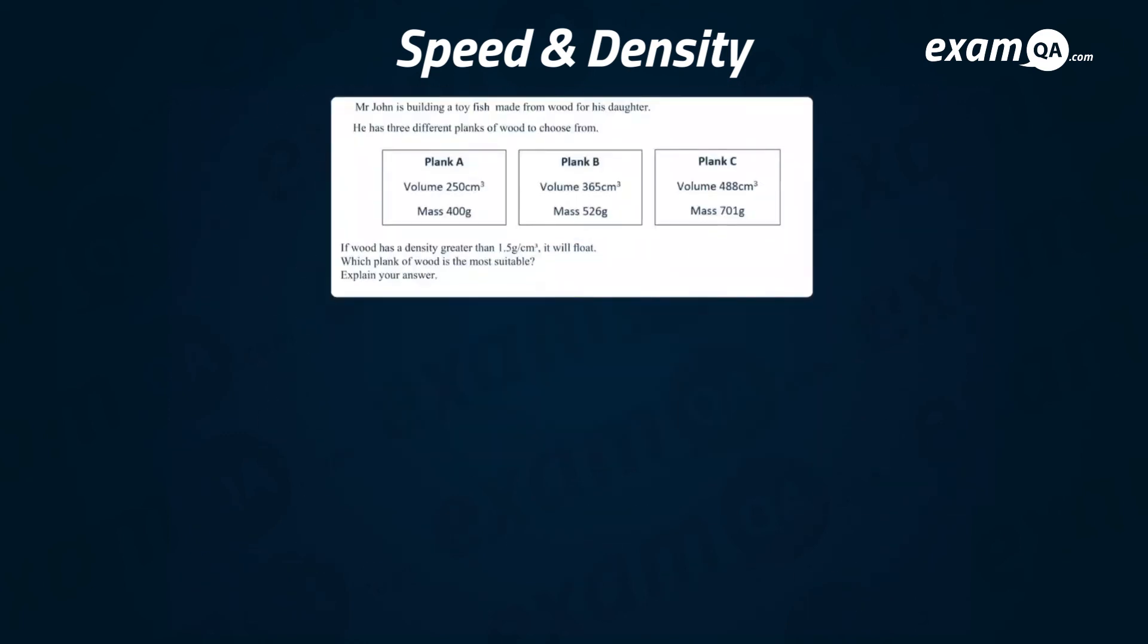Next question and the last question we have a density question. The question says Mr. John is building a toy fish made from wood for his daughter. He has three different planks of wood to choose from: plank A, plank B, and plank C. If wood has a density greater than 1.5 grams per centimeter cubed it will float. Which plank of wood is the most suitable? We want to work out which plank has a density greater than that 1.5. What is the formula for density? Density equals mass over volume.